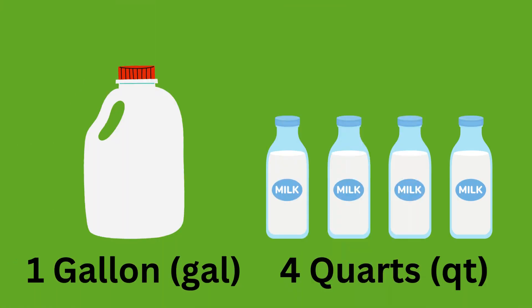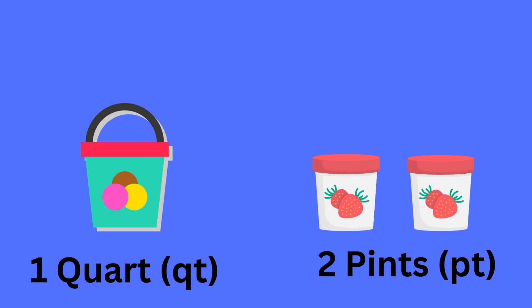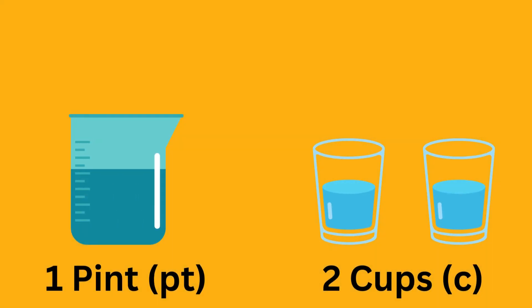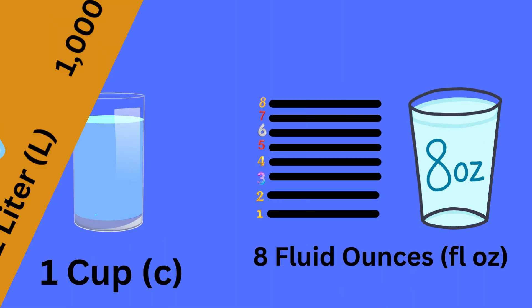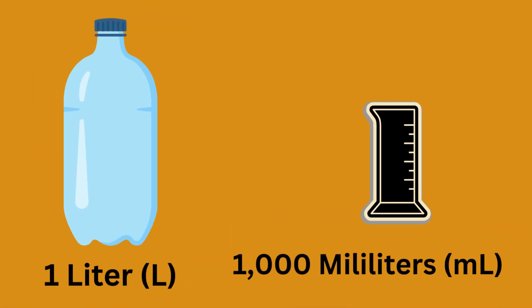One gallon is four quarts, one quart is two pints, one pint is two cups, one cup is eight fluid ounces, one liter is 1,000 milliliters.